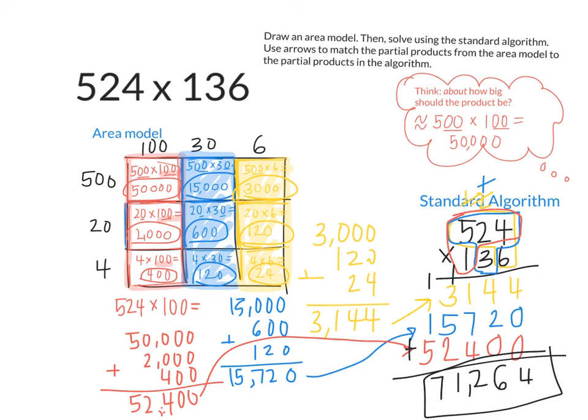Now, let's check back at our estimation. We thought it should be pretty close to 50,000. Is 71,264 in the same ballpark in terms of place value? Does it have all the same place values? Is it bigger than 50,000? Is that what we expected? So with your estimation, you can feel pretty confident that our answer at least is in the right zone.